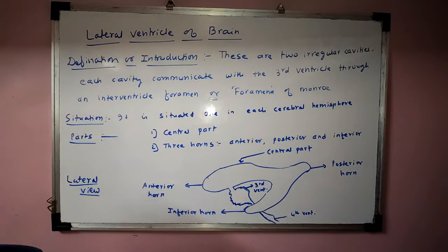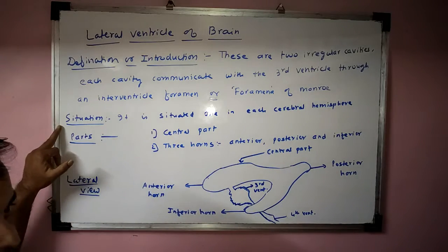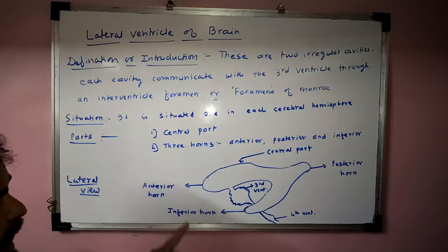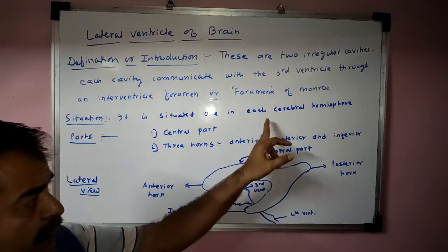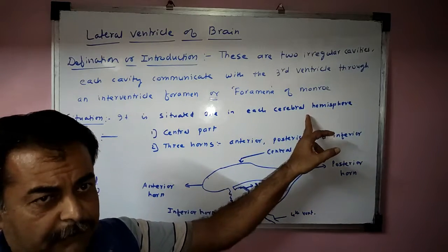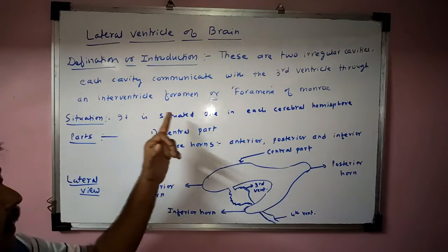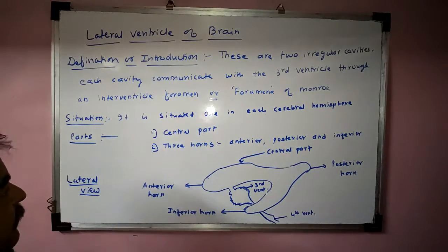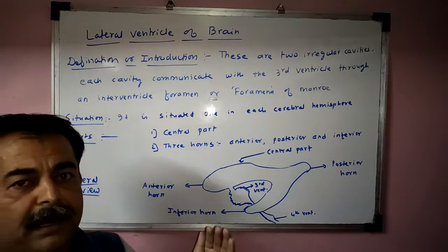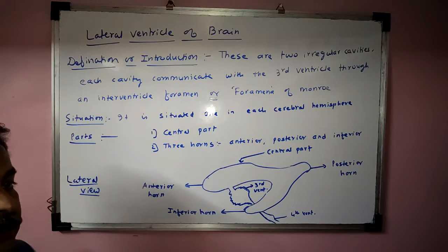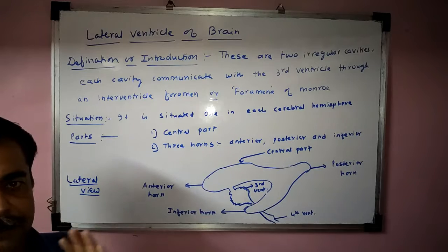The lateral ventricles are situated in each cerebral hemisphere. The cerebrum is the larger part of the brain, and these lateral ventricles are situated one in each cerebral hemisphere. Now we will see the parts of the lateral ventricle.